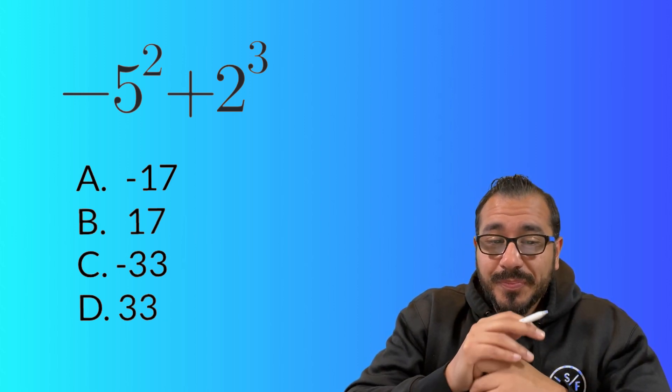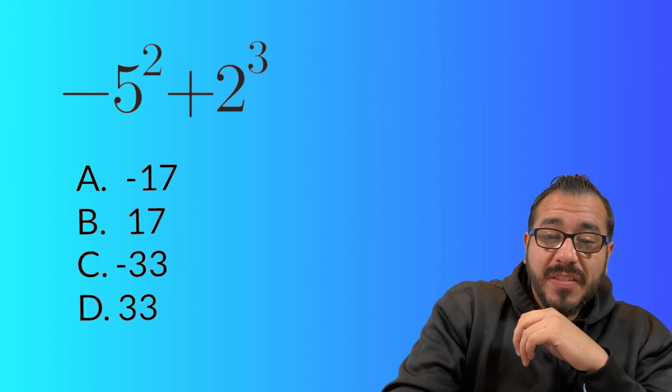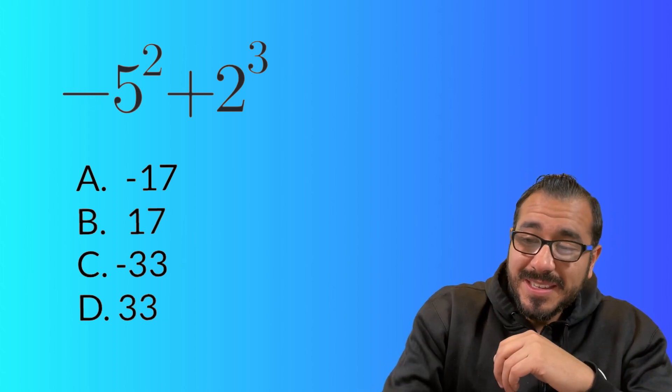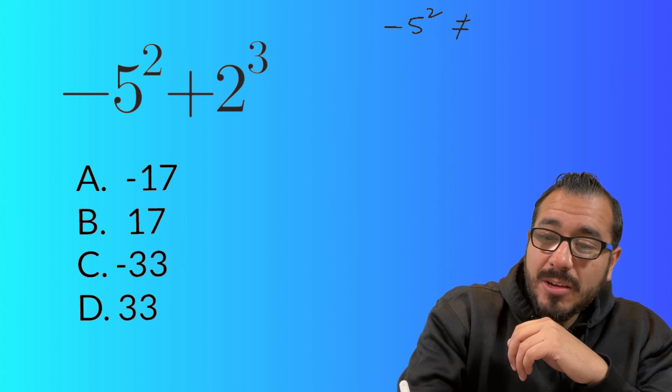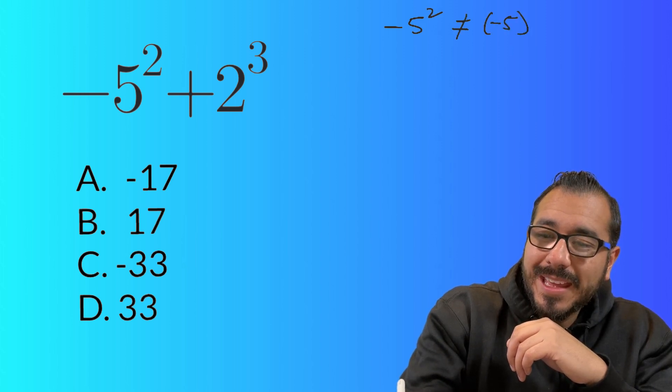So what we're going to do is we're going to square the five and it's going to remain negative because negative five squared is not equal to negative five squared.